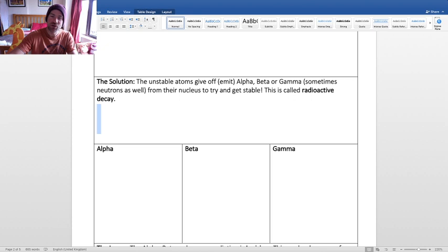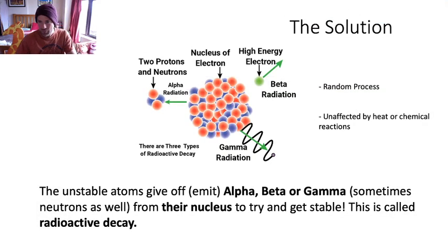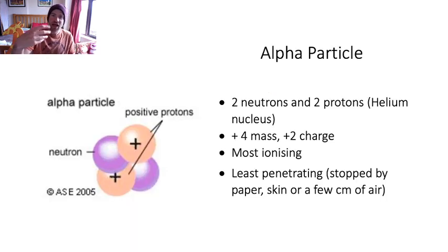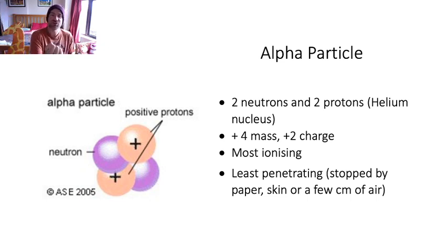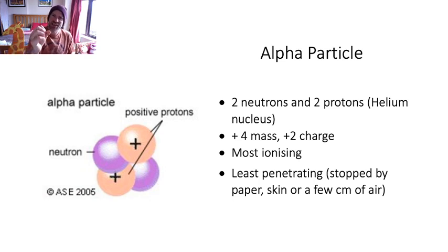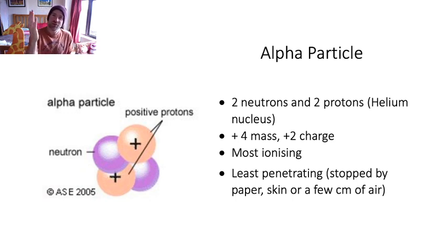So you've got three boxes on your sheet - alpha, beta, gamma. As we go through the PowerPoint, add the properties of each into those boxes. Alpha particles: some atoms will give out an alpha particle from their nucleus to become stable. It's simply two neutrons and two protons - it just kicks out two protons and two neutrons. That's what Rutherford has been firing at the gold foil. It's like a little chunk of nucleus, or a helium nucleus, because that's what a helium nucleus looks like.